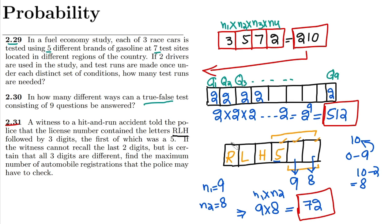The answer is 72 number plates, since the letters RLH and the first digit 5 are constant, and only the last two digit positions vary. I hope these concepts are now clear — how to approach these problems by creating a conceptual block, dividing it into slots, and writing the choices for each slot. That's enough for today; see you soon.